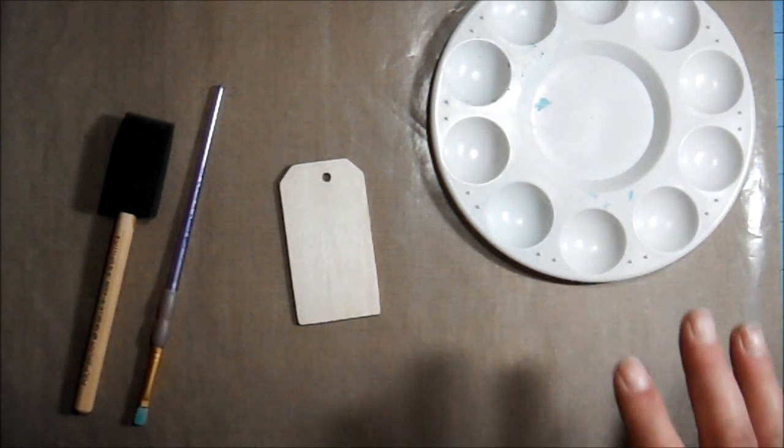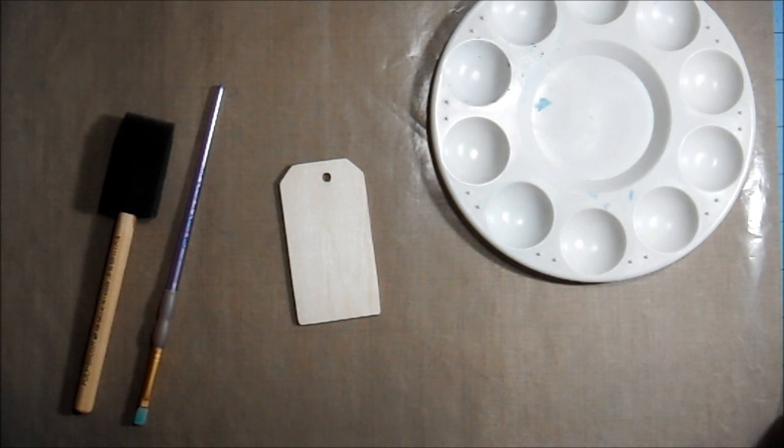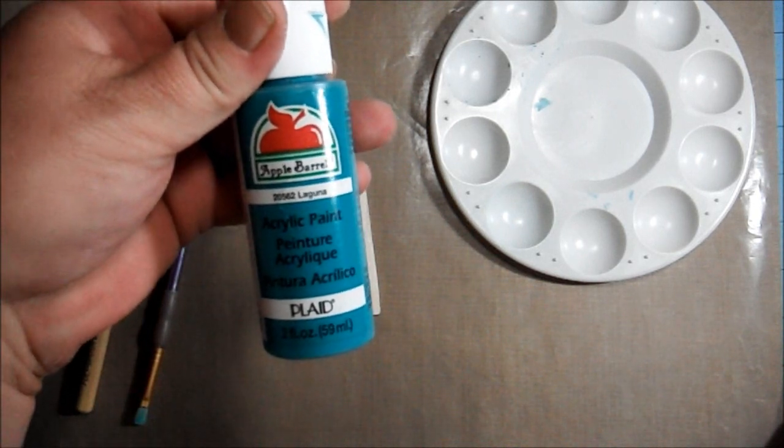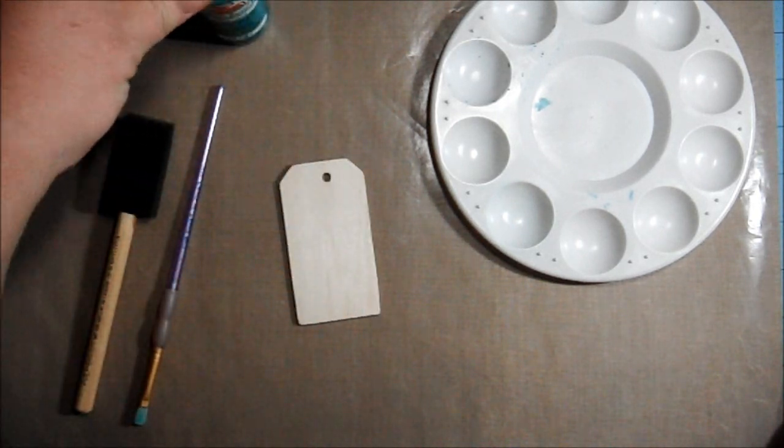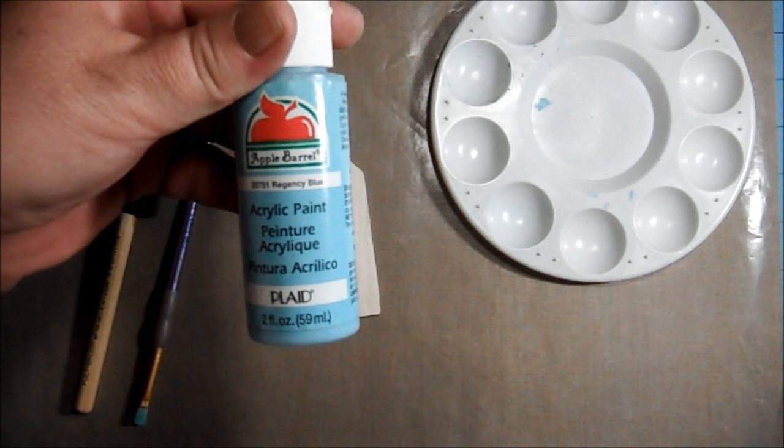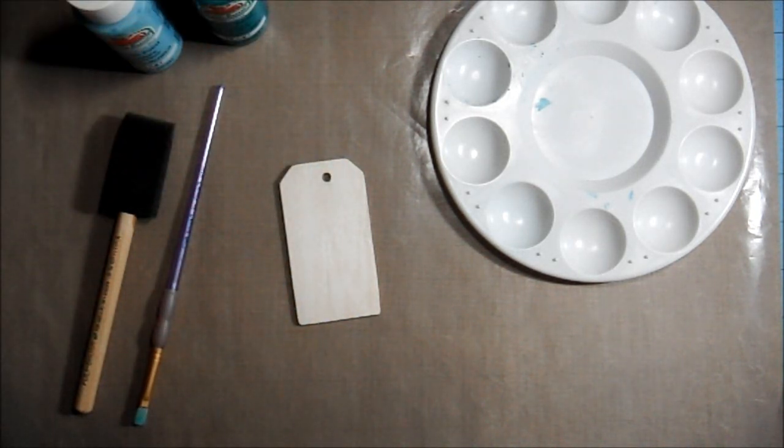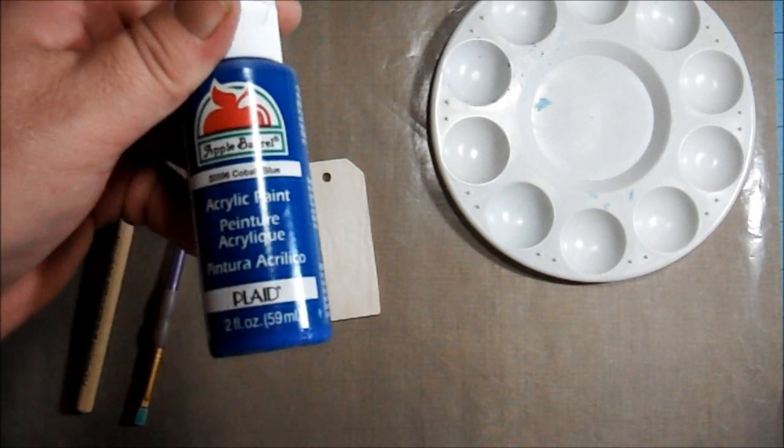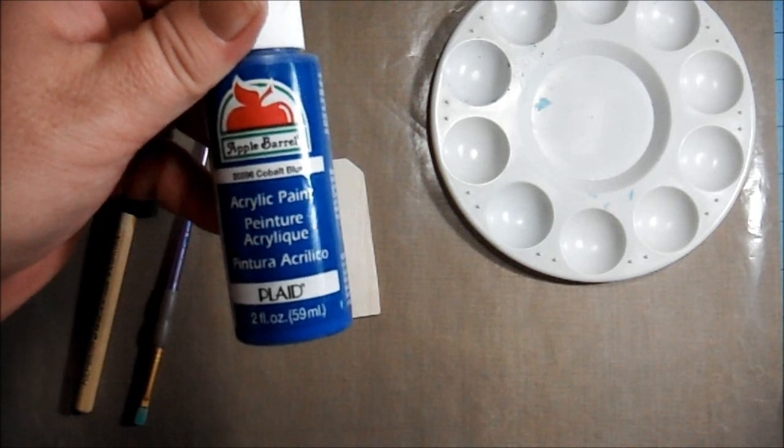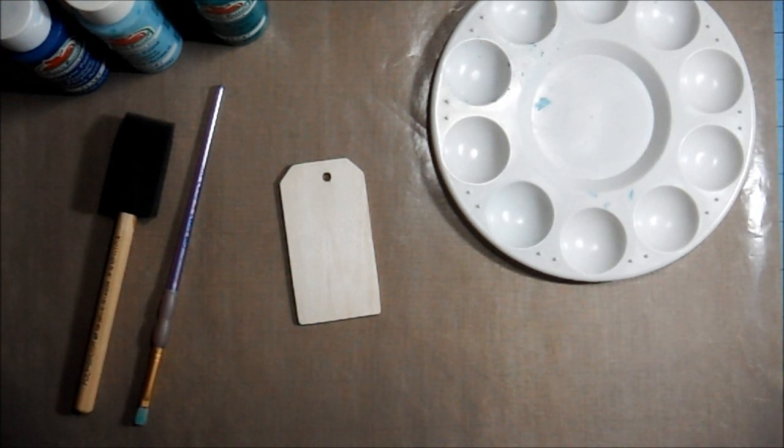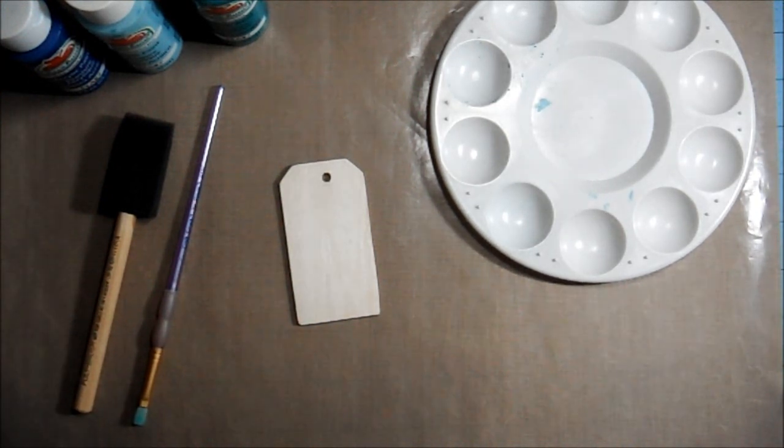Now the colors I used on my beach themed frame were Laguna from Apple Barrel, this pretty green color, and Regency Blue from Apple Barrel as well, and Cobalt Blue, which is also from Apple Barrel. These are just regular acrylic paints, craft paints. You can use Folk Art or whatever brand you choose to use.